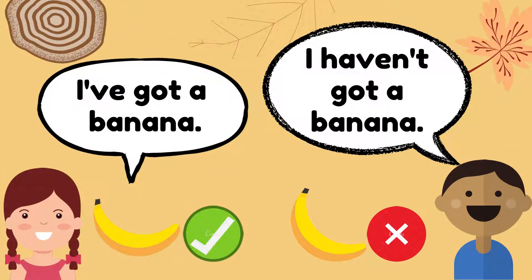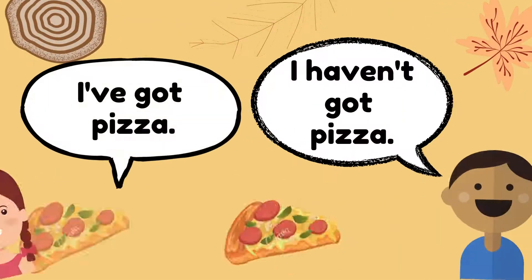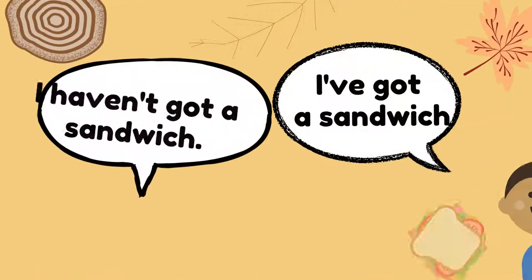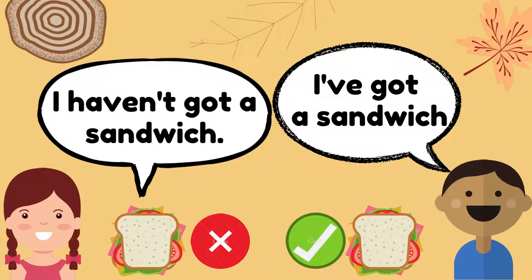Now, let's talk about what you've got and haven't got. I've got a banana. I haven't got a banana. I've got pizza. I haven't got pizza. I haven't got a sandwich. I've got a sandwich. You can role play with your friends and siblings at home.